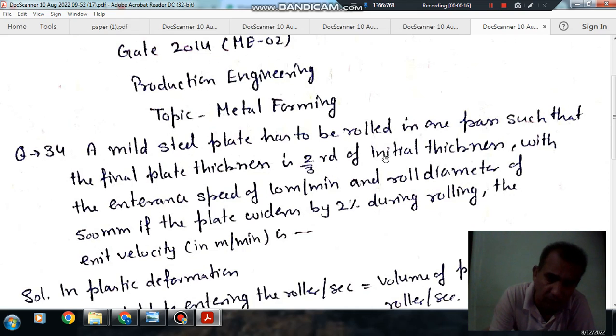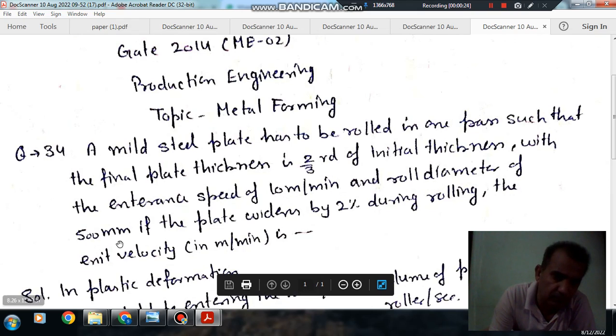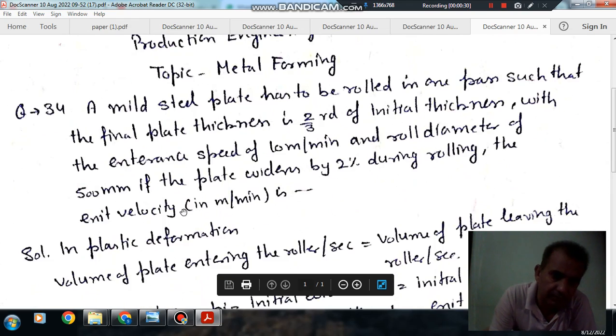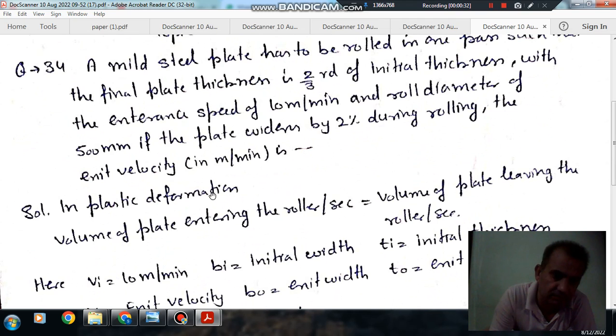is two-third of the initial thickness, with the initial speed of 10 meter per minute and roll diameter of 500 mm. If the plate widens by 2% during rolling, the exit velocity in meter per minute is: